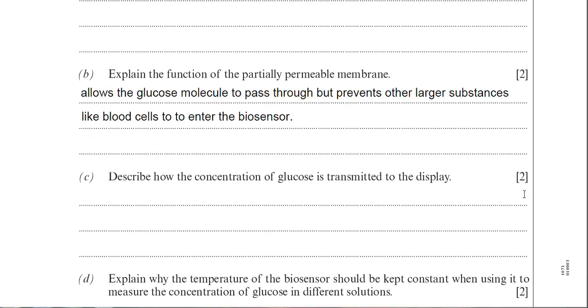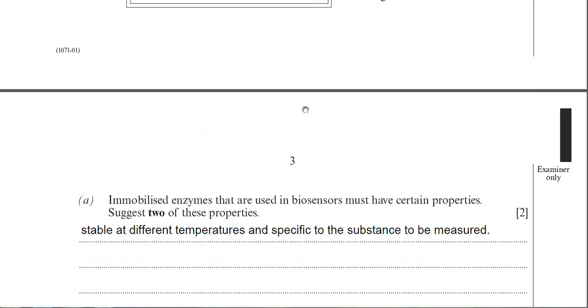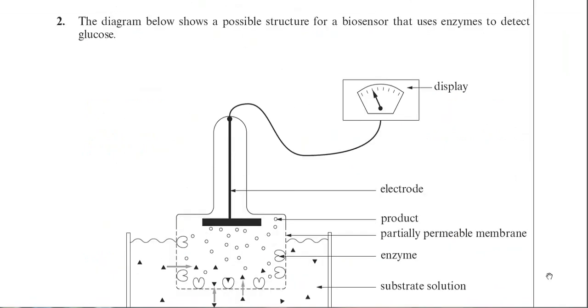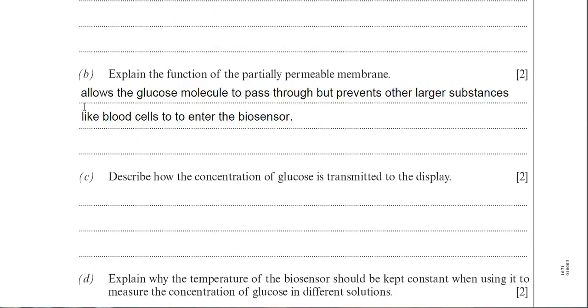So there's my answer there. I've stated that it allows the glucose molecule to pass through but prevents other larger substances like blood cells to enter the biosensor. A little tip for you: because the question is specifically to do with the detection of glucose, you need to keep your answer relevant to the question. So that's why I've stated that it allows glucose to enter and to pass through the membrane. Try and keep it relevant to the question. The examiner wouldn't allow general statements like allow small molecules to pass through because he has told you it is there to detect glucose.